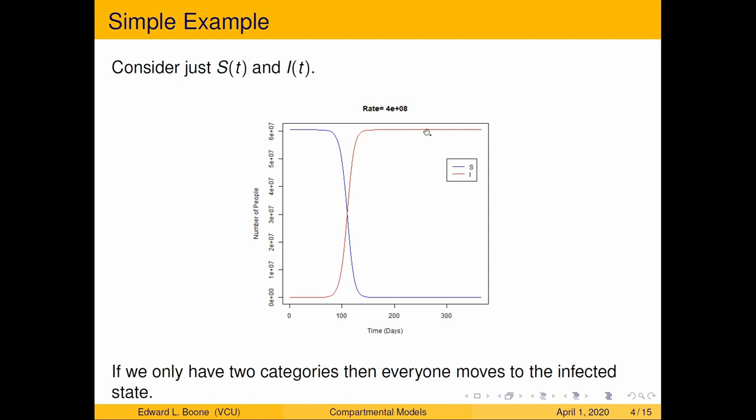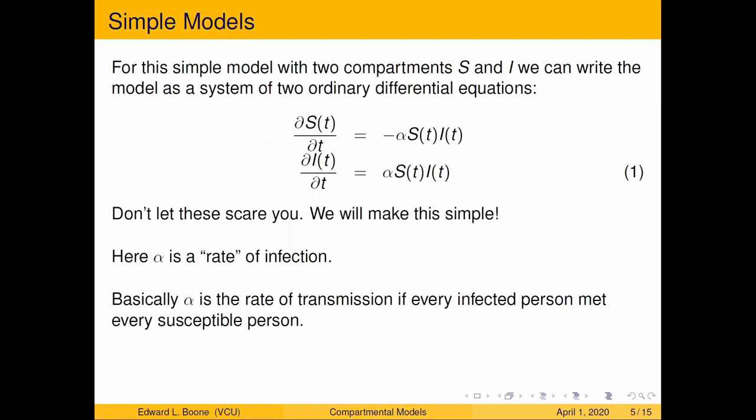At some point everybody becomes infected and no one is susceptible. This is not the most ideal model but it works for illustration purposes. Now what we want to do is add complexity to this model so it's useful. But first we're going to have to go through a little bit of mathematics.